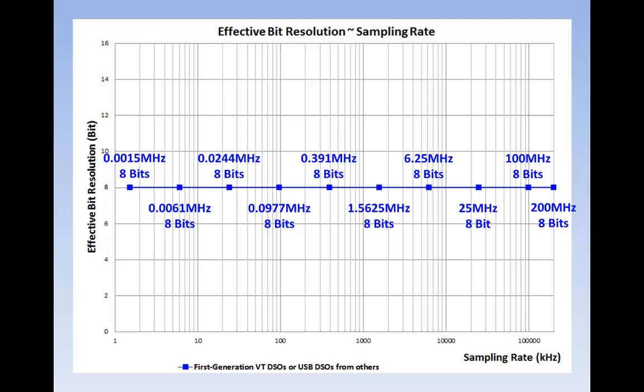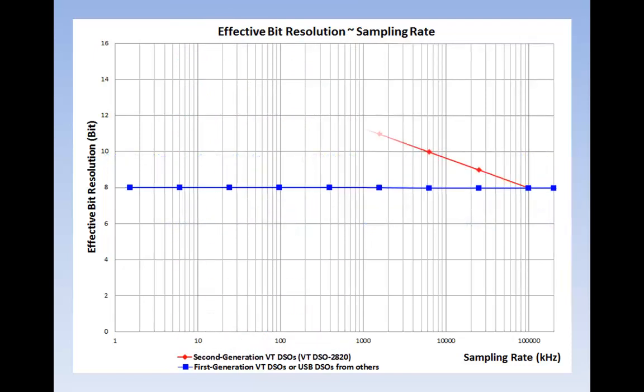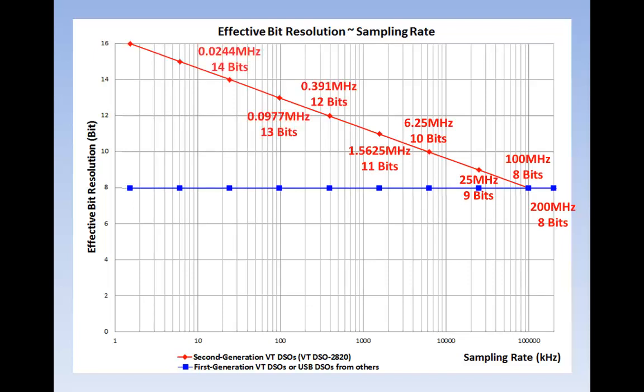While a bit resolution of 8 is generally sufficient for many high-frequency applications such as electronic tests, low-frequency applications such as audio and vibration analysis usually require a bit resolution higher than 8. However, oscilloscopes with a fixed bit resolution higher than 8 are very expensive. This is where the second generation of VT DSOs come into play. Here we take VT DSO 2820 as an example. The bit resolution increases from 8 to 16 as the sampling rate goes down from 200 megahertz to 1 kilohertz.